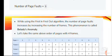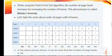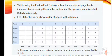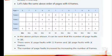While using the First In First Out algorithm, the number of page faults can increase when the number of frames is increased. This phenomenon is called Belady's Anomaly. Taking the same page reference order with 4 frames, it can be seen that the number of page faults is 10. There were 9 page faults with 3 frames and 10 page faults with 4 frames — the number of page faults increased by increasing the number of frames.